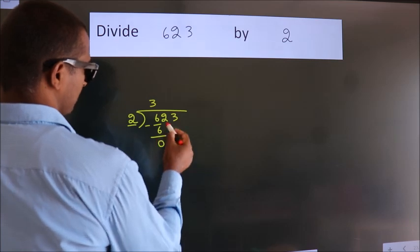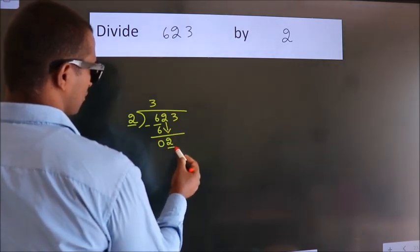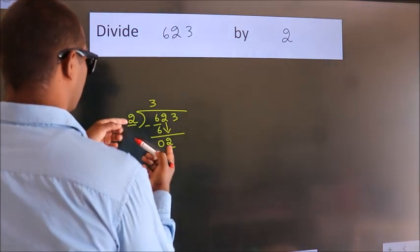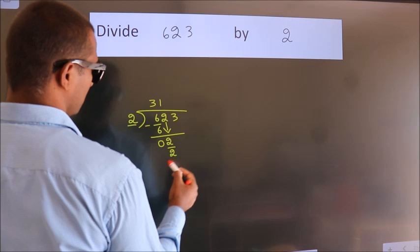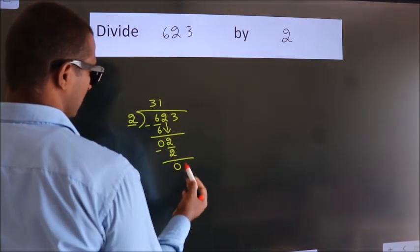After this, bring down the next number, which is 2. When do we get 2? In the 2 times table, 2 times 1 is 2. Now we subtract and get 0.